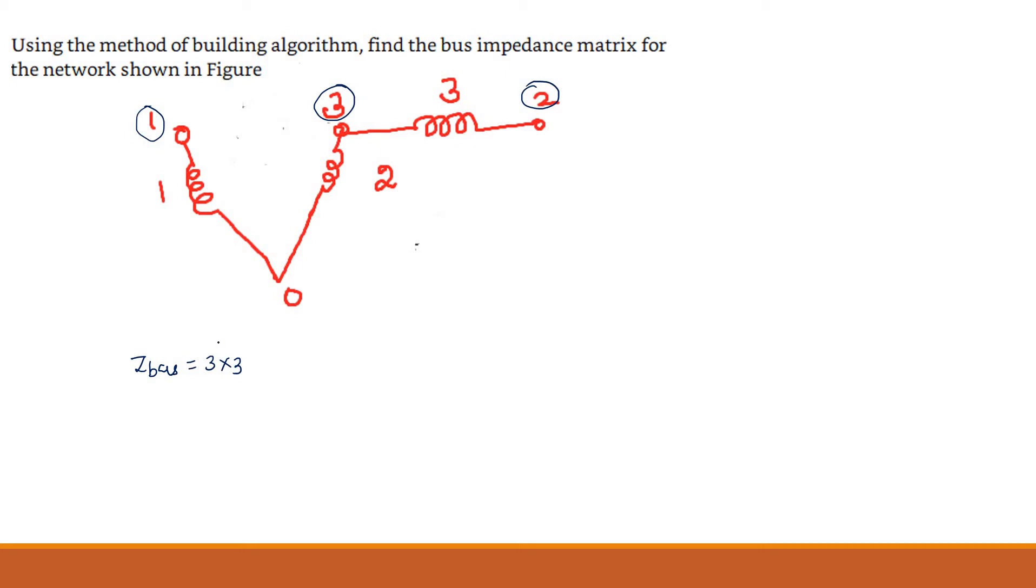There are 3 steps needed to form the Z bus matrix. First, step number 1: consider bus 1, this is a new bus. New bus 1 is connected to the reference bus. I am going to write the Z bus matrix equal to Z11. That is element (1,1), what is the element? That is 1.